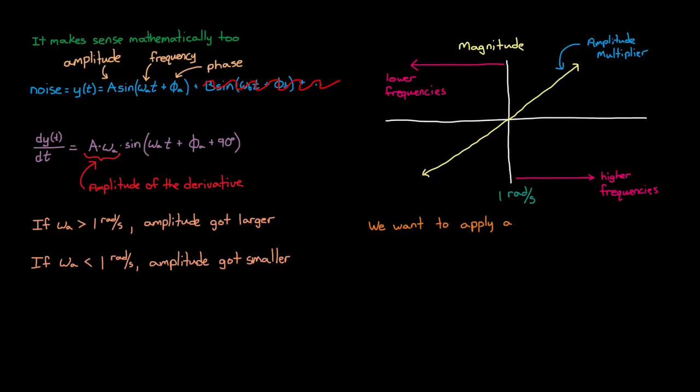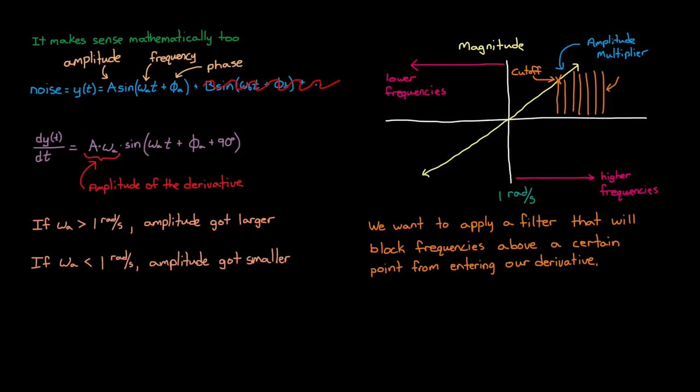So we want a filter that can block frequencies above a certain point from entering our derivative and causing problems. This point is called the cutoff frequency, and as designers we have the choice of where to place it. For example, do we place it at a high frequency and block just the orange section, or place it lower and block the green section?